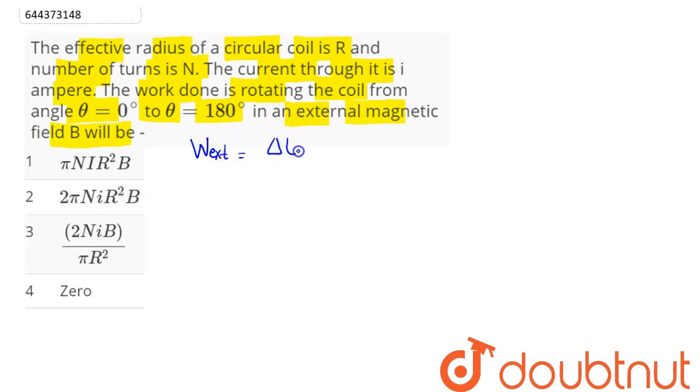And we have here potential energy given by the formula minus M dot B here. So this is equal to minus M into B into cos of theta.